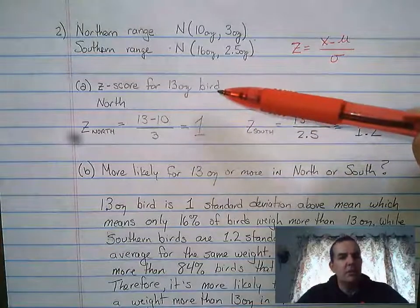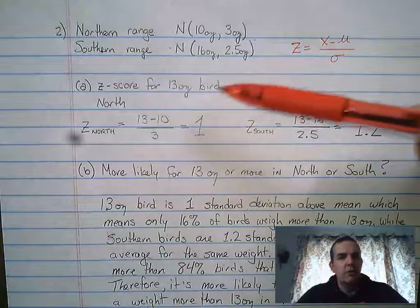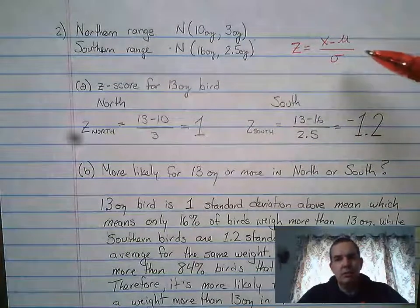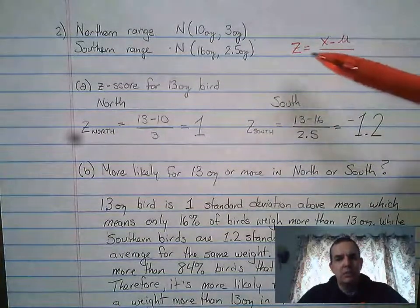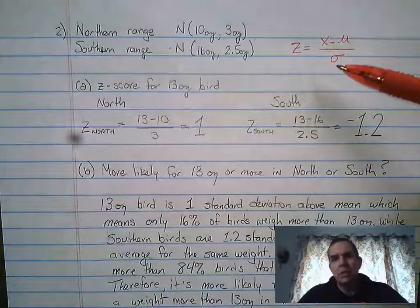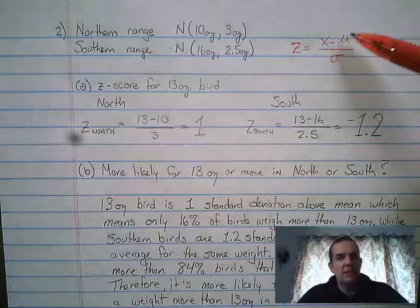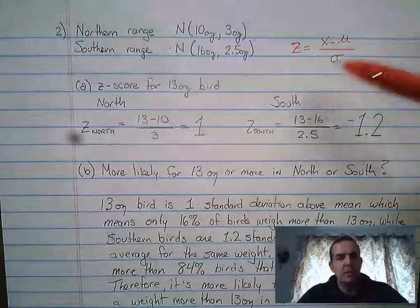The first question asks you to determine what is the z-score for a 13-ounce bird in each range. You're going to use the z-score formula, which is right here: z equals, it's the standardized score, equals x minus μ over σ. This is on your formula sheet, so it's your data value minus the mean divided by the standard deviation.